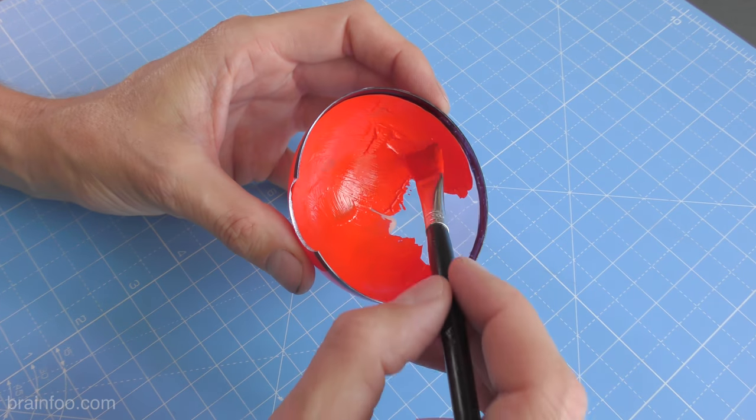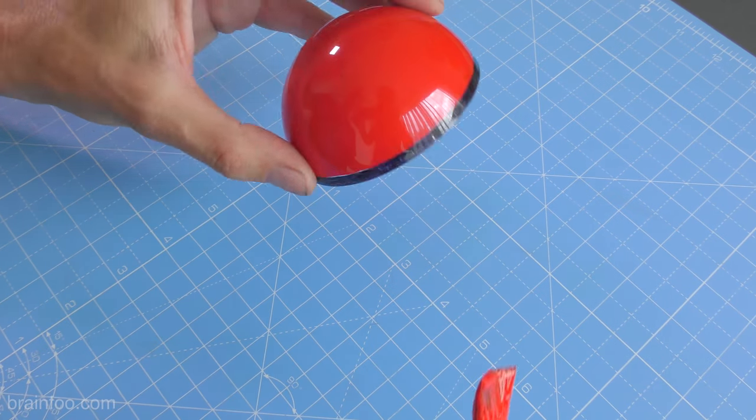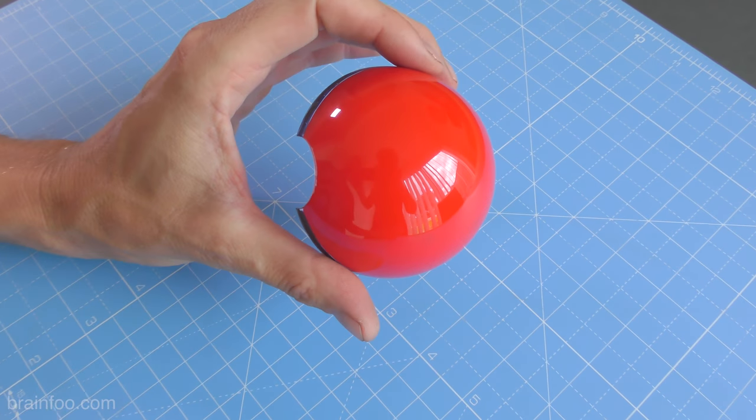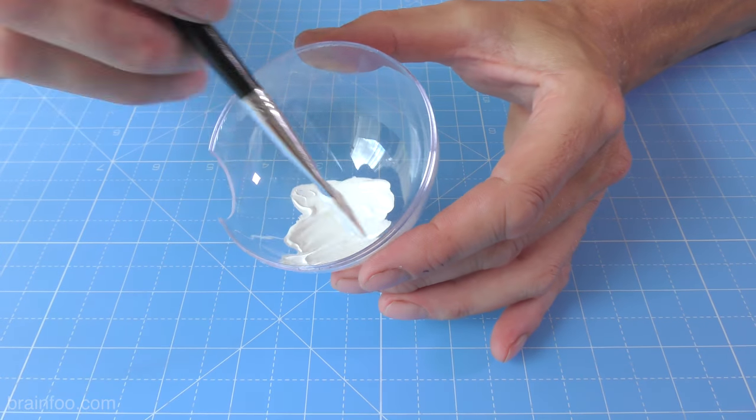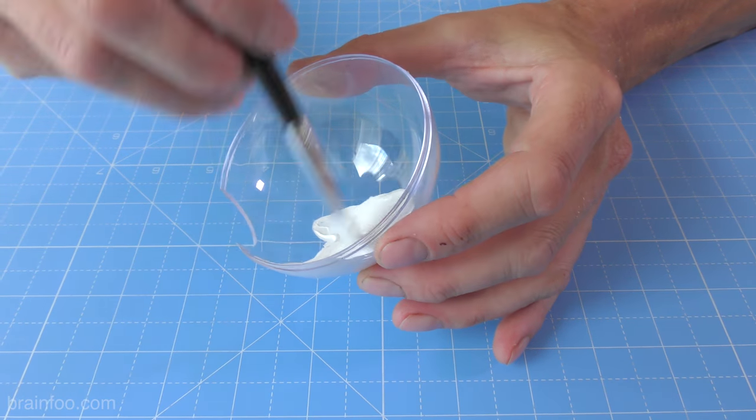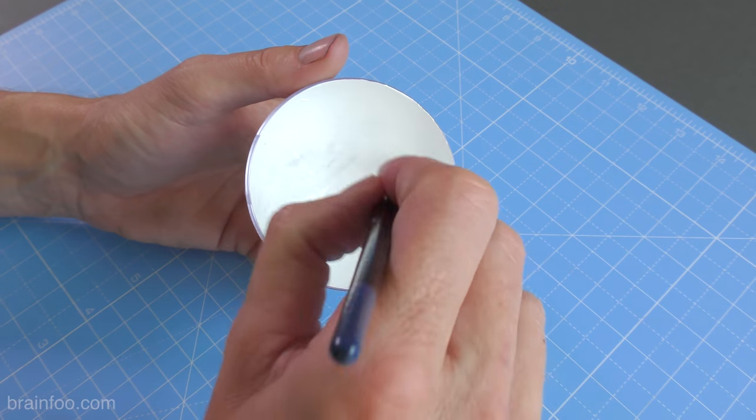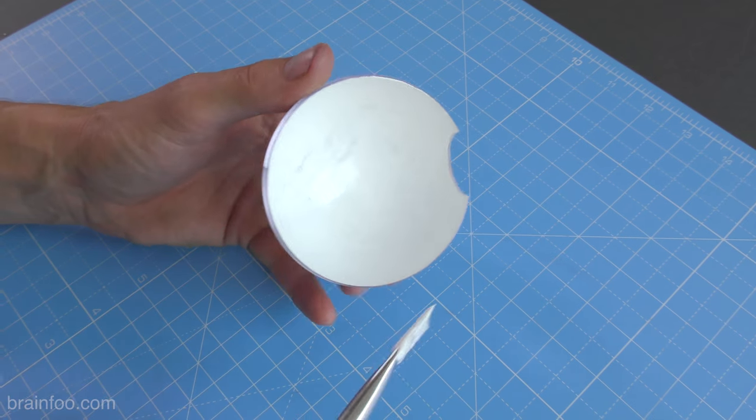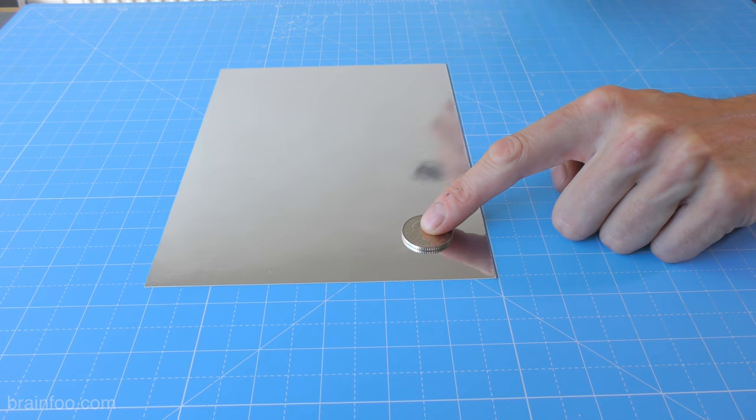Get the paint on nice and thick and as even as you can. Then when you turn the ball over the finish should look great. The other male section gets the exact same treatment but this time there's no details to worry about. Just smash it on. And while that's drying we can crack on with the button detail.